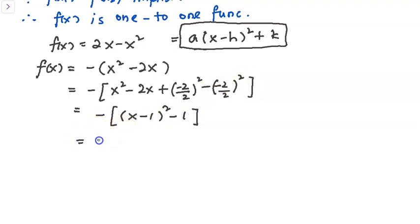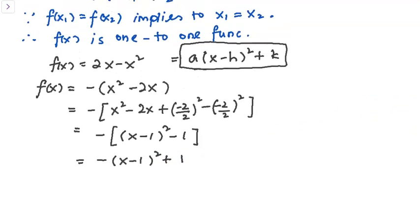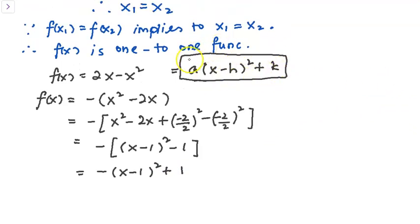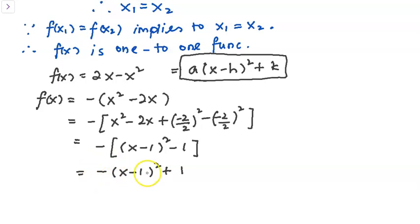We have successfully changed our quadratic function into the vertex form: a(x minus h) squared plus k, specifically negative(x minus 1) squared plus 1. This form is very useful because from it we can see the maximum or minimum point. Since a equals negative 1, which is less than 0, this function has a maximum point at (1, 1), given by h and k.